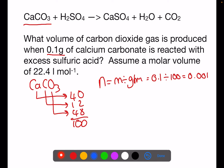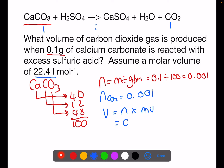Looking at the mole ratio, one mole of calcium carbonate will produce one mole of carbon dioxide. This means that our number of moles of carbon dioxide will be the same. To calculate the volume, we do number of moles times molar volume, so 0.001 times 22.4, which gives a volume of 0.0224 litres.